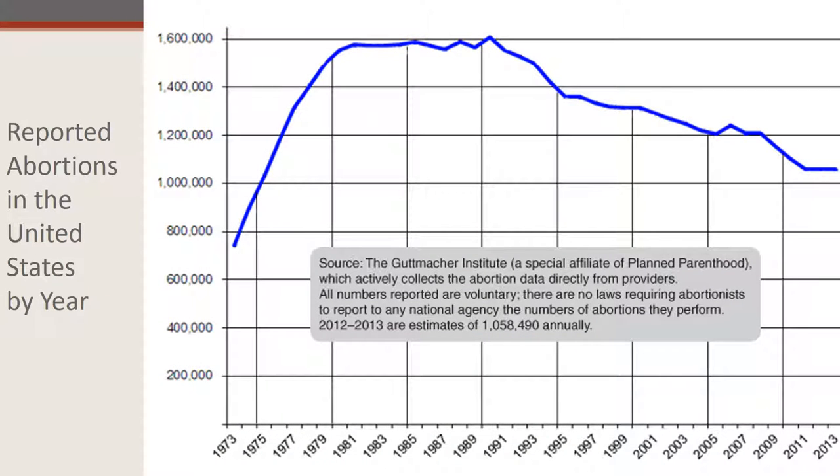According to the Guttmacher Institute, an organization which does research on sexual and reproductive health worldwide, the number of abortions per thousand women aged 15 to 44 has steadily decreased since around 1981 and has leveled off for the past four or five years. Now, the reasons women give for having abortions underscore their understanding of the responsibilities of parenthood and family life. Three-fourths of women cite concern for or responsibility to other individuals. Three-fourths say they cannot afford a child. Three-fourths say that having a baby would interfere with work, school, or the ability to care for dependents. And half say they do not want to be a single parent or are having problems with their husband or partner. Abortions are going down, but ironically, in the United States, two of the states which have new restrictions have seen increases in abortion. Louisiana and Michigan, for example.